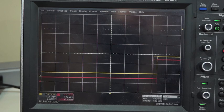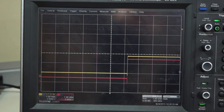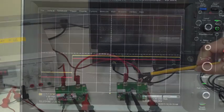The output of the ACS712 is the yellow trace on the scope and the ACS724 is the red trace on the scope.